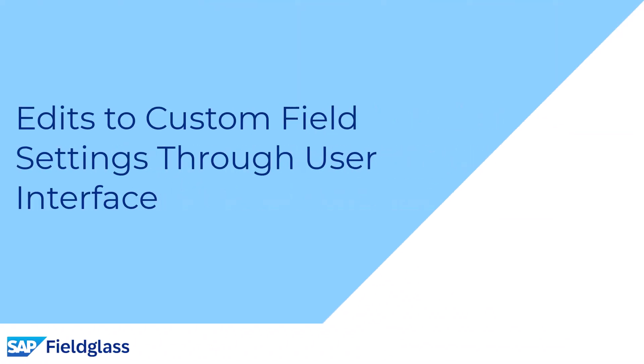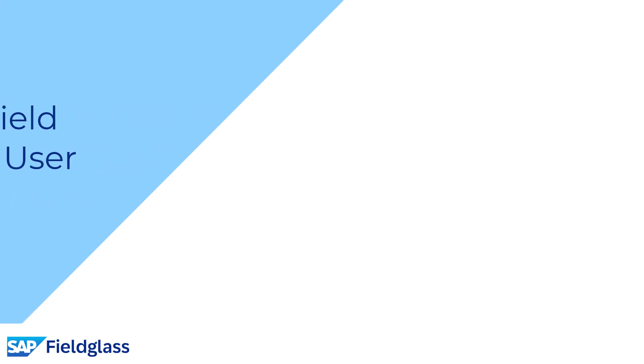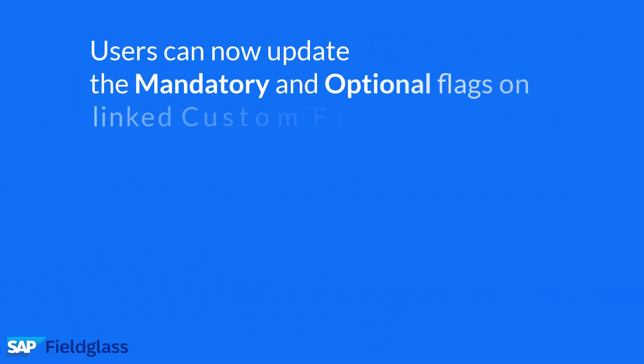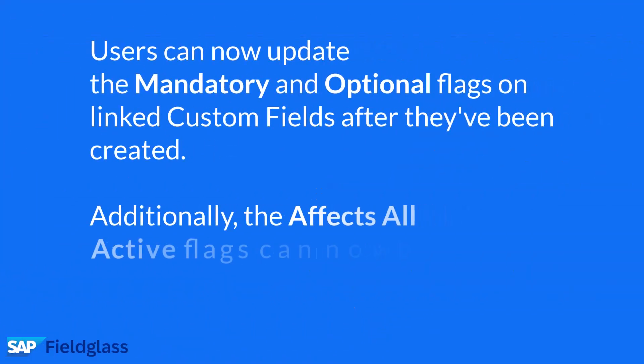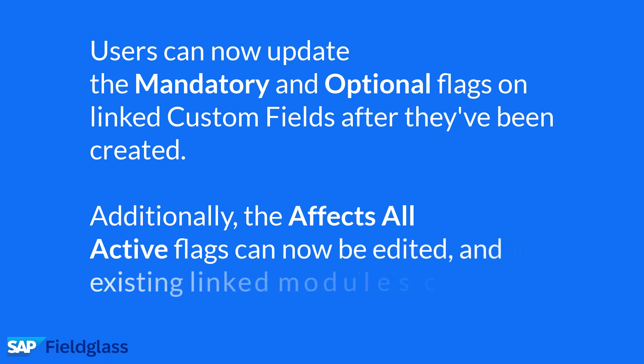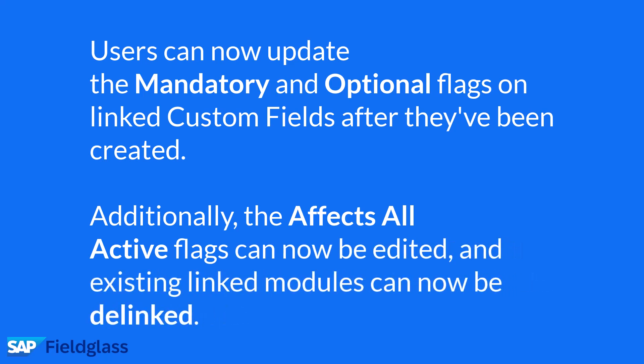The second-to-last self-service item is an innovation that allows edits to custom field settings through the user interface. Users can now update the mandatory and optional flags on linked custom fields after they've been created. Additionally, the 'affects all active' flags can now be edited and existing linked modules can now be delinked.